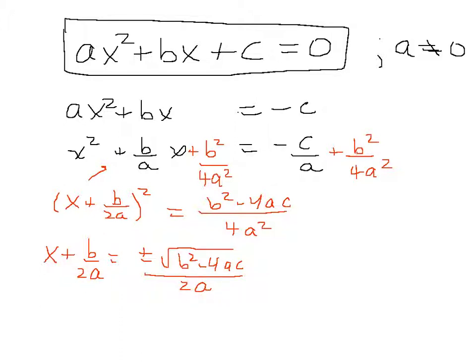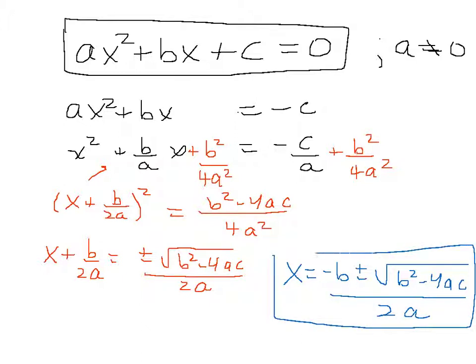And so finally, I can rewrite this by subtracting b over 2a from both sides. And notice the denominators are going to be the same. I get my final solution, which is x is equal to minus b plus or minus the square root of b squared minus 4ac all over 2a. And this is the quadratic formula.